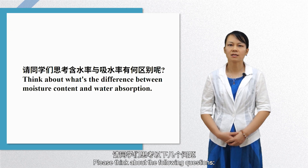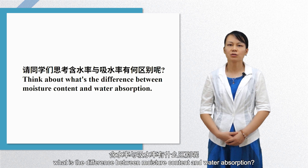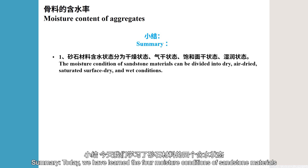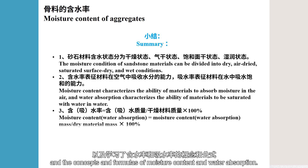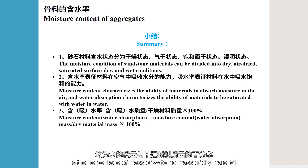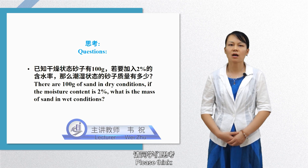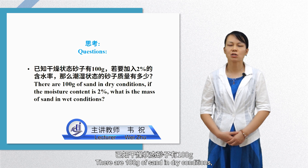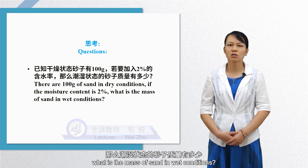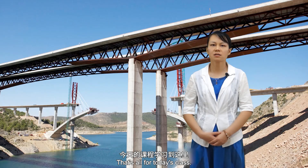Please think about the following question: what is the difference between moisture content and water absorption? In summary, today we have learned the four moisture conditions of sandstone materials and the concepts and formulas of moisture content and water absorption. The formula for moisture content or water absorption is the percentage of mass of water to mass of dry material. Please think: there are 100 grams of sand in dry conditions. If the moisture content is 2%, what is the mass of sand in wet conditions? That's all for today's class. Thank you.